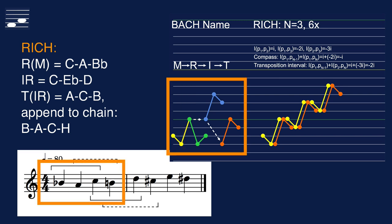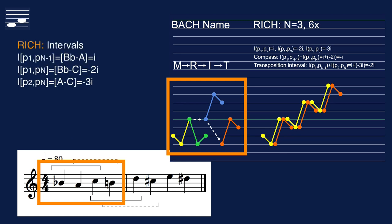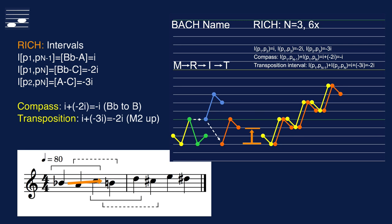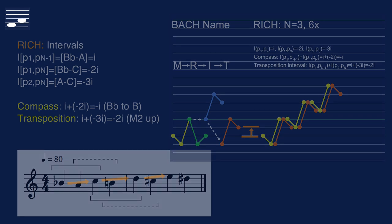Here are the interval calculations. From first to second note, B-flat to A, the interval class is I, a semitone down. First to last note, that is from B-flat to C yields minus 2I in ascending major second. And from second to last note we find an ascending minor third. Entering these values into the formulas, we determine the compass after the second statement, from P1 to P4. And this turns out to be minus I, corresponding to the minor second, or augmented unison, between B-flat and B natural. In case we want to append another element to the chain, this would be a transposed version at the interval of minus 2I, a whole tone up. The staff and diagram show the result when we create a six-statement chain.